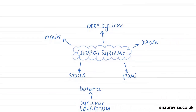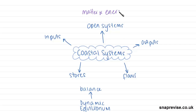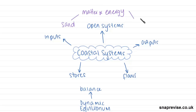Coastal systems are also open systems. Open systems are systems where matter and energy can be transferred in and out of the system. So for example, within a coastal system, matter would be things like sand and sediment, and energy is things like waves and wind.